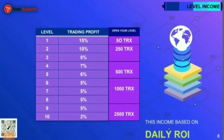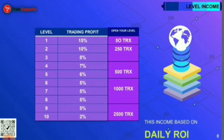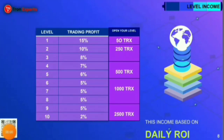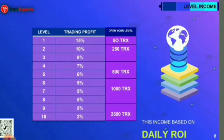The next income type is Level Income. The 1st level is 15%, 2nd level is 10%, 3rd level is 8%, 4th level is 7%, 5th level is 6%, 9th level is 5%, and the 10th level is 2%.